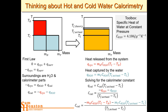For the simple hot-and-cold-water experiment, the calorimeter constant will be fairly small. When we do bomb calorimetry, we'll have a large stainless steel bomb, electrical leads, and other components, so the calorimeter constant will be much larger.